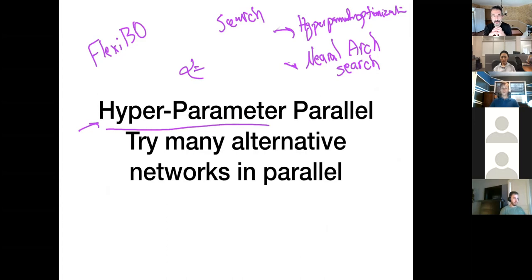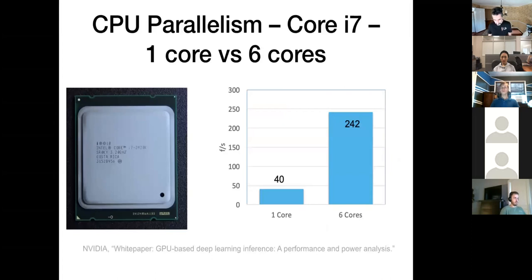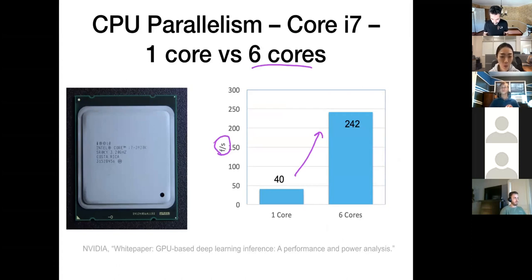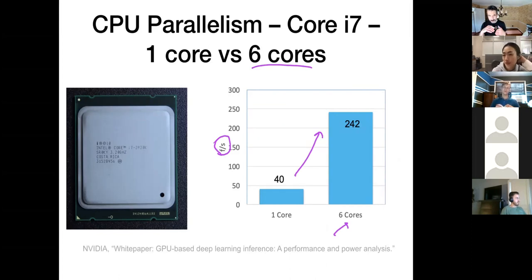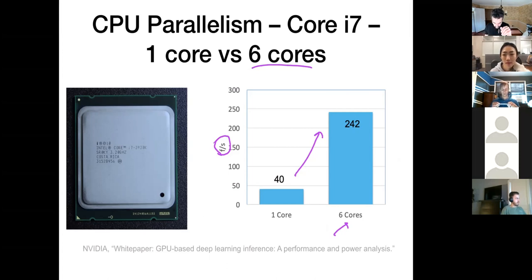With more cores, you typically get linear increase in performance — measured as number of frames per second you can calculate. With more cores, this metric increases roughly linearly. Both model parallelism and data parallelism contribute to this.